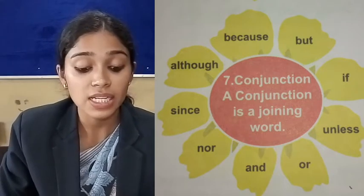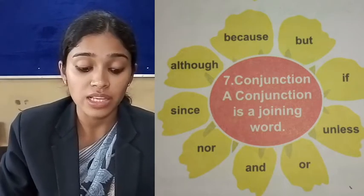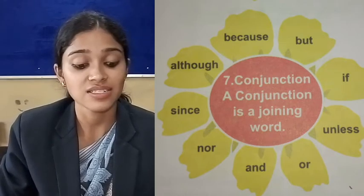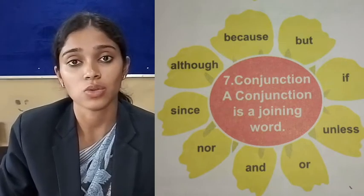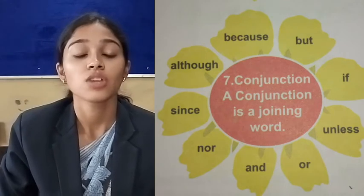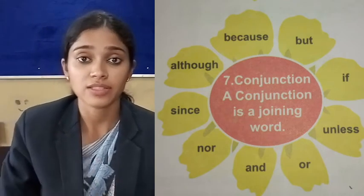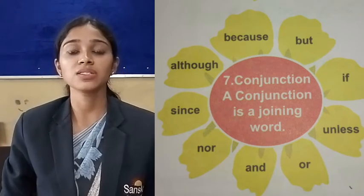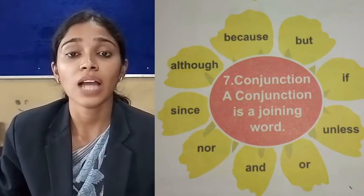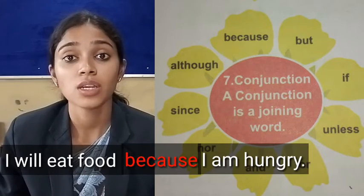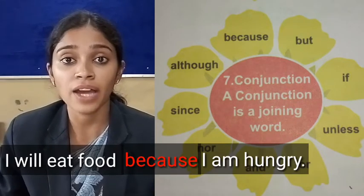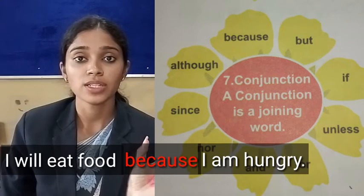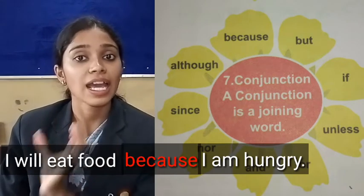The examples are: because, but, if, unless, or, and, nor, since, although. These are conjunctions. Just take the example — because. The example sentence is: I will eat food because I am hungry.